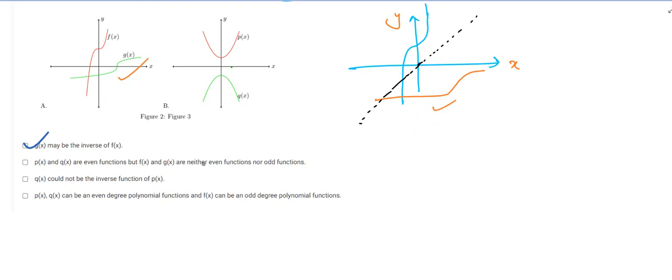The next option says px and qx are even functions but fx and gx are neither even nor odd. By analogy with the previous question, for px and qx we can observe that for some positive and negative x the values of y are the same — the change of sign does not affect the graph's y-value. But for fx and gx the values are not equal, so those functions are neither even nor odd. This option is correct.